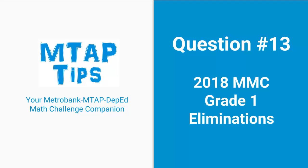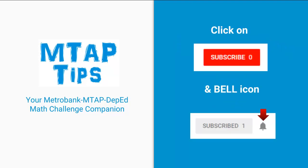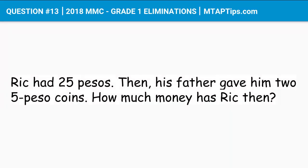Question number 13 for 2018 MMC grade one eliminations. Don't forget to subscribe for more MTAP tips and click on the bell icon to get notifications when we upload new videos. Rick had 25 pesos, then his father gave him two 5-peso coins. How much money does Rick have then?